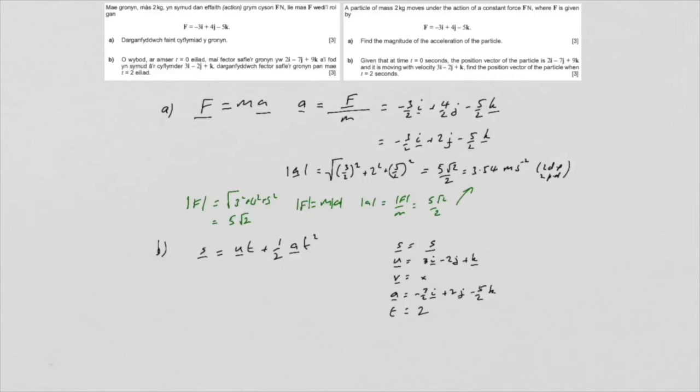Now, at this point, I must say, I find writing the i's, j's, and k's out irksome. So I'm going to write column vectors. So SI, sj, sk equals U, which is 3 minus 2, 1, times 2, plus a half of minus 3 over 2, 2 minus 5 over 2, times 2 squared.